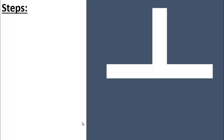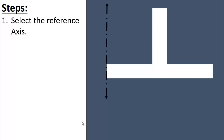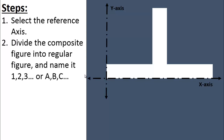The first step of locating the centroid of a given figure is to select the reference axis. The reference axes are selected at the extreme left and at the bottom of the given figure, though you can select them at any point. Next, divide the composite figure into regular figures and name them 1, 2, 3 or A, B, C. For example, this inverted T-section can be divided into two rectangles, represented by green and orange color, named 1 and 2.